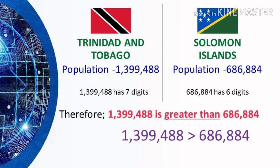Now let's compare the population of two different countries. We have Trinidad and Tobago and Solomon Islands. The population of Trinidad and Tobago is 1,399,488, while the population of Solomon Islands is 686,884. Trinidad and Tobago's population has 7 digits, while Solomon Islands has only 6 digits. Therefore, the population of Trinidad and Tobago is greater than the population of Solomon Islands: 1,399,488 is greater than 686,884.